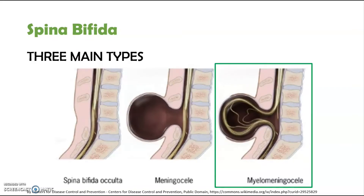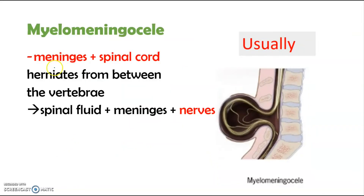The last type remaining is myelomeningocele. This is the most severe form of spina bifida. In myelomeningocele, the meninges and the spinal cord protrude from between the vertebrae. You can also tell from the name that the spinal cord is involved. So this time, the sac includes the spinal fluid, meninges, and the nerves, thus making it the most severe form of the three types introduced.